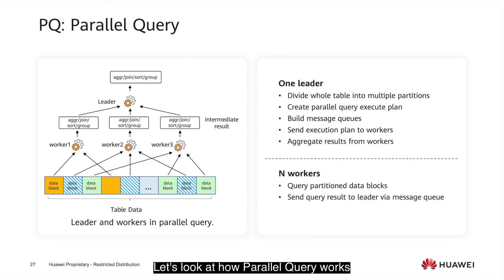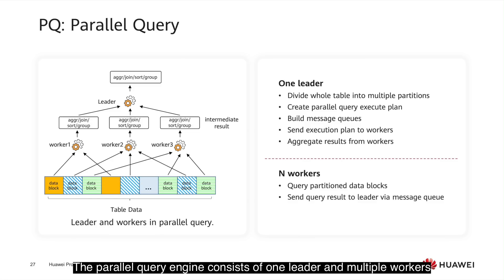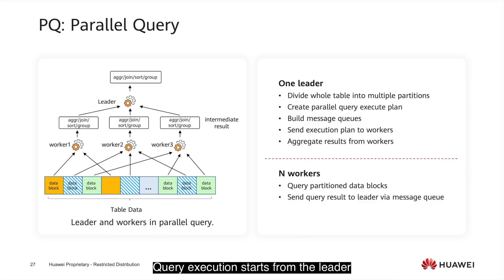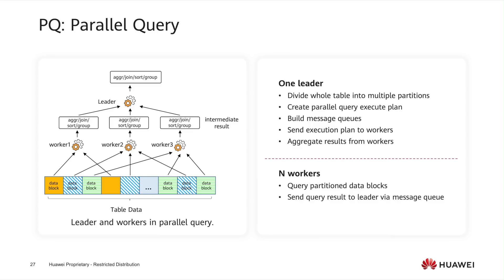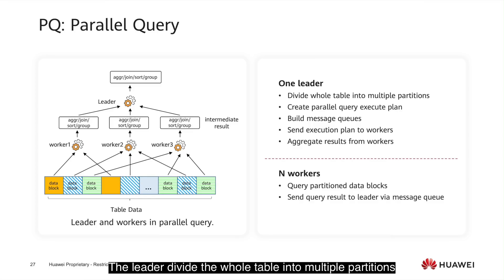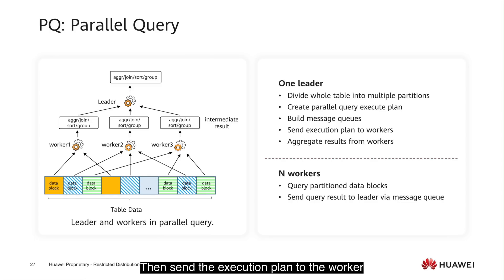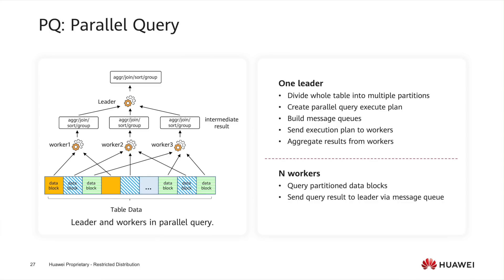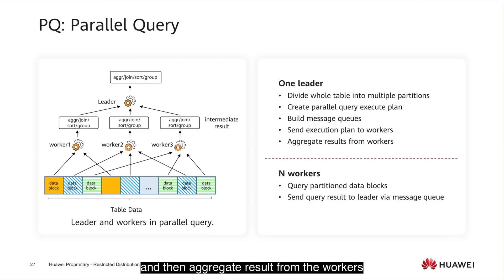Let's look at how parallel query works. The parallel query engine consists of one leader and multiple workers. Query execution starts from the leader. The leader divides the whole table into multiple partitions, and then creates a parallel query execution plan. It sends the execution plan to the workers, and then aggregates the results from the workers.